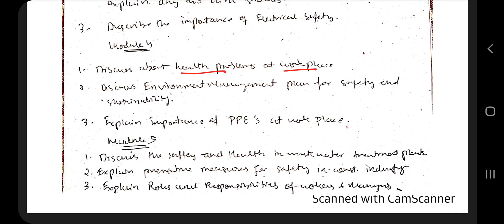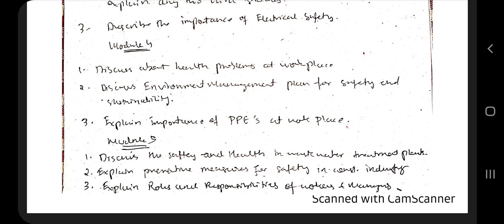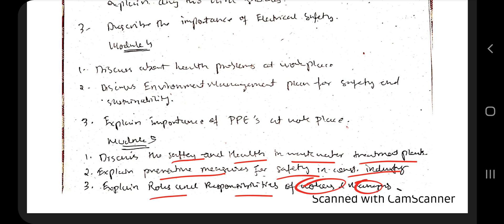Coming to Module 4, we have health problems at the workspace — what are the different health problems. Also cover the environmental measurement plan, also known as EMP, for safety, and mention its sustainability. Explain the importance of PPEs. Then there are topics on safety and health in wastewater treatment plants, preventive measures for the safety of the construction industry, and roles and responsibilities of workers and management.